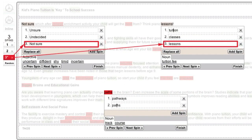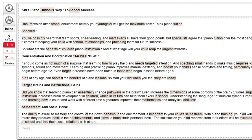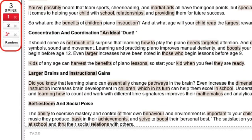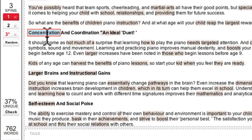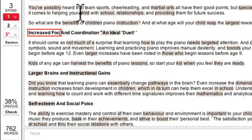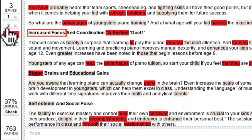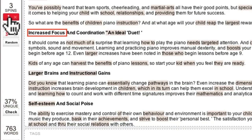It's important to understand that this is still a single article and that these keys just give me access to three different views of that article. So if I change text that is not contained in a spin block, that text will be changed in my article regardless of which view I'm looking at. These keys just allow me to see the different variations within the spin blocks — all the other text is common to all three views.